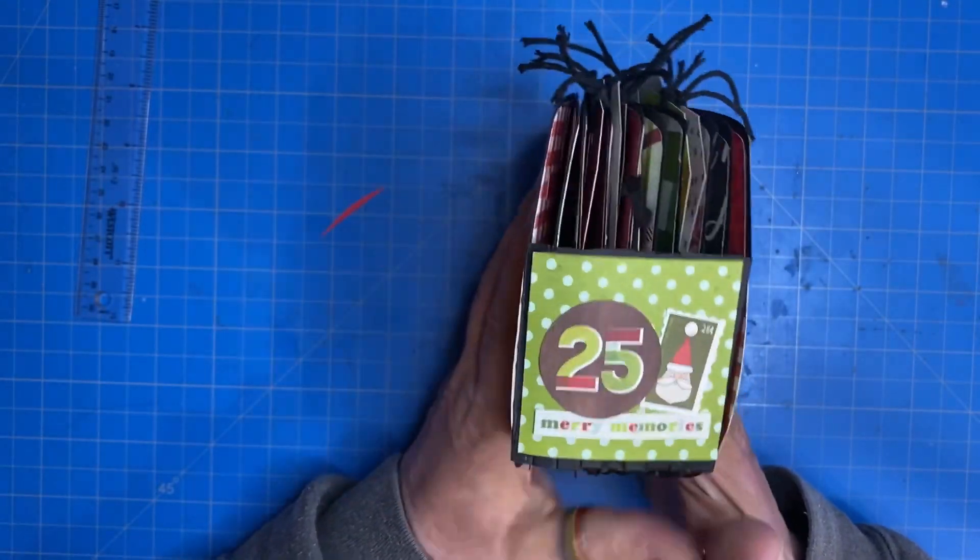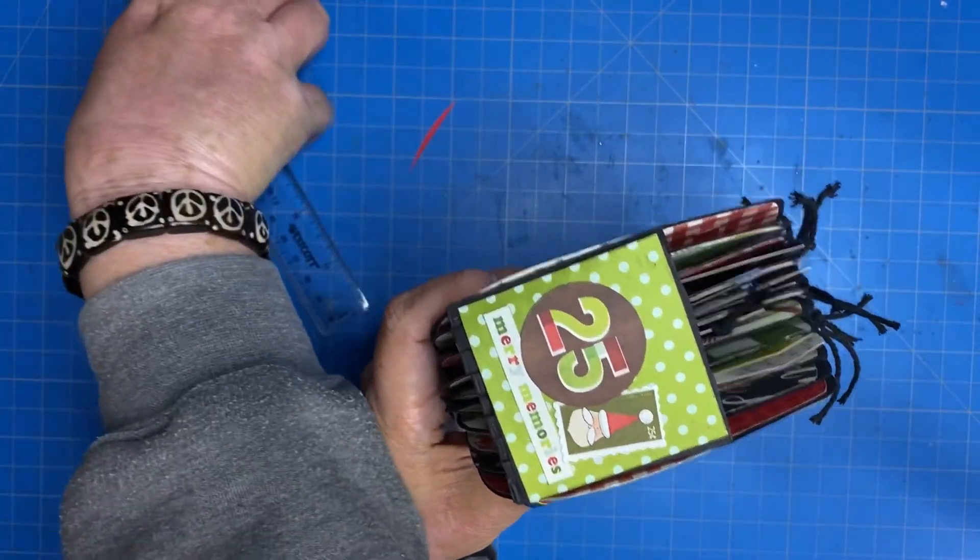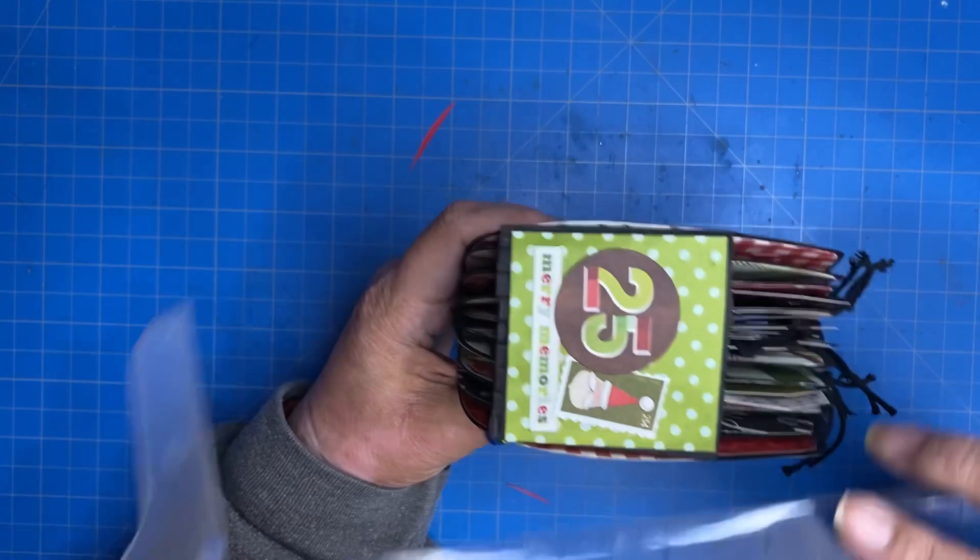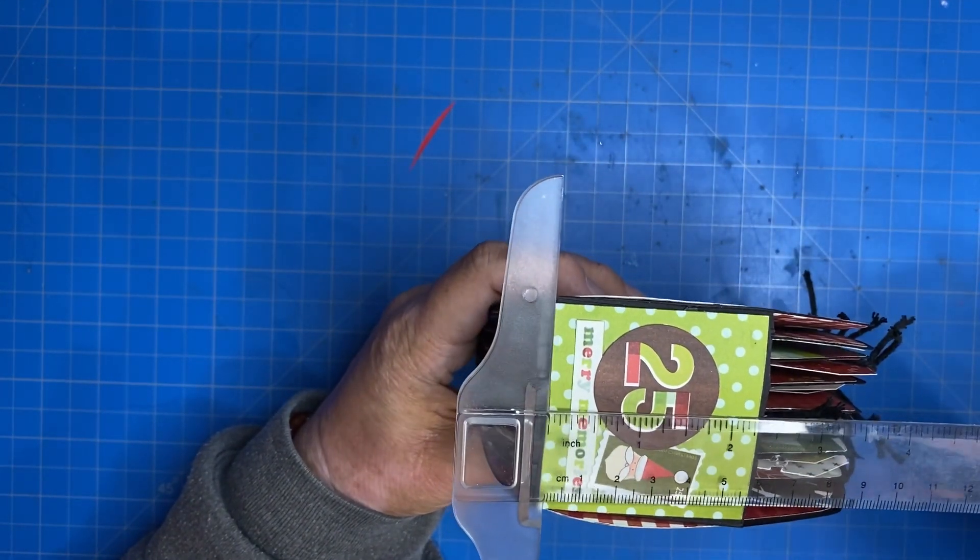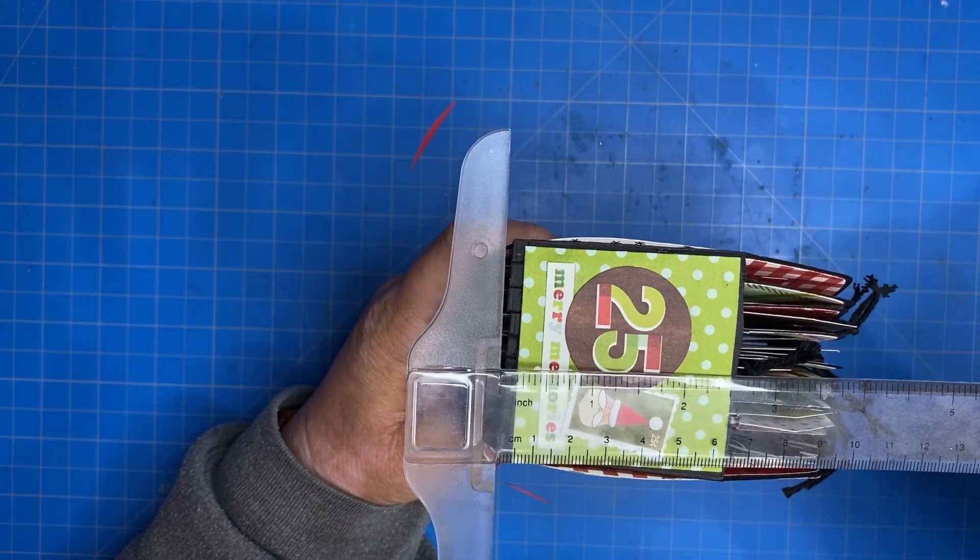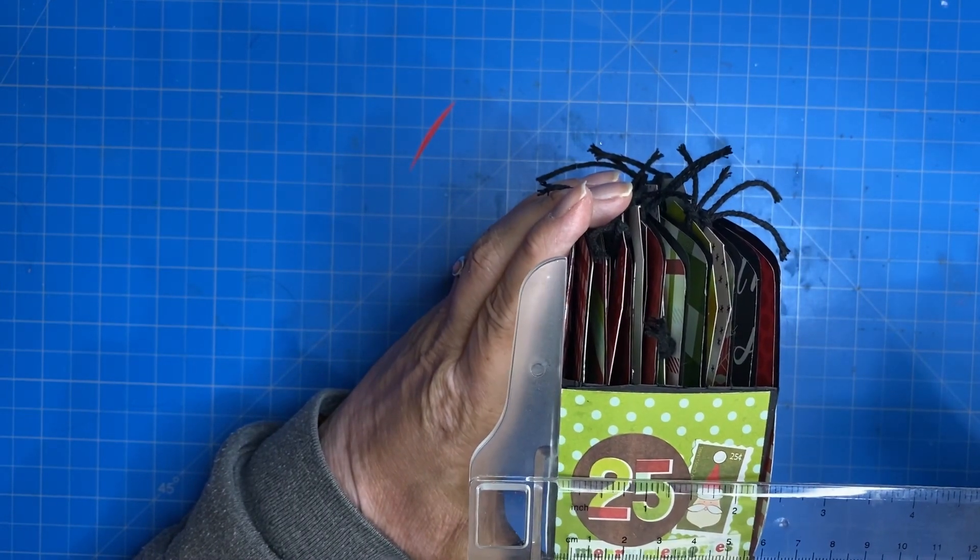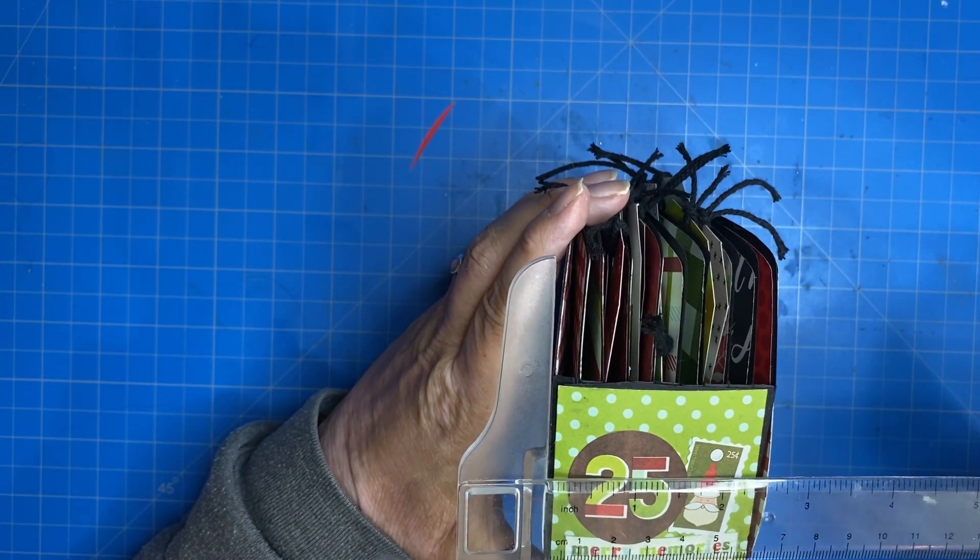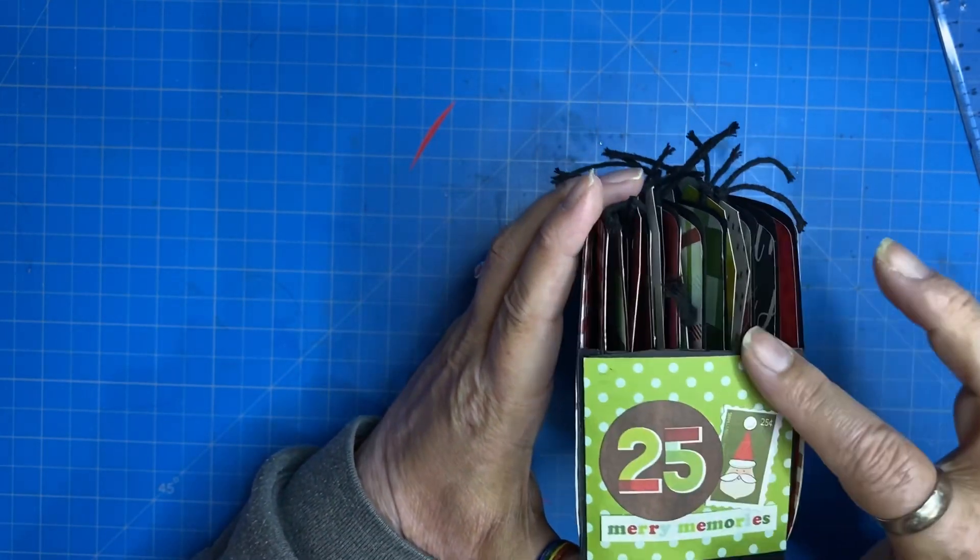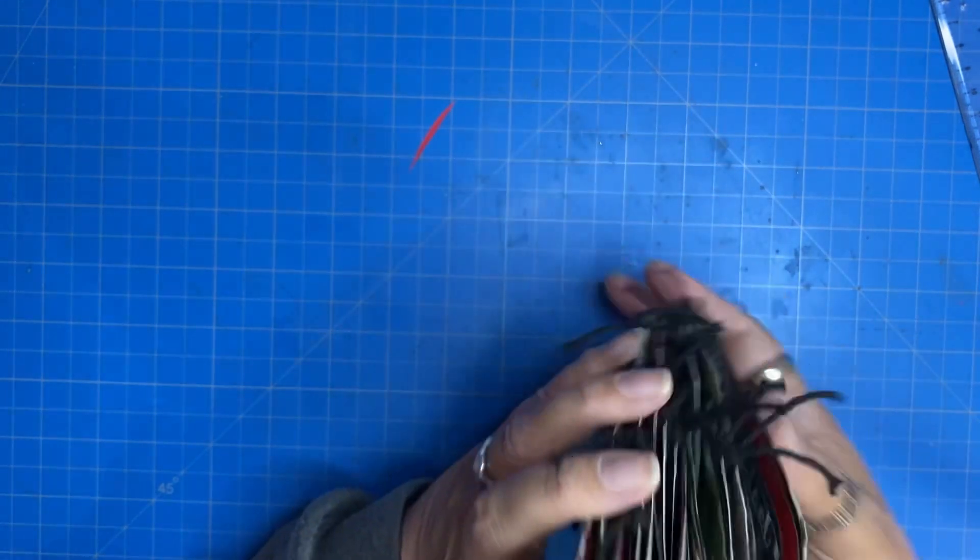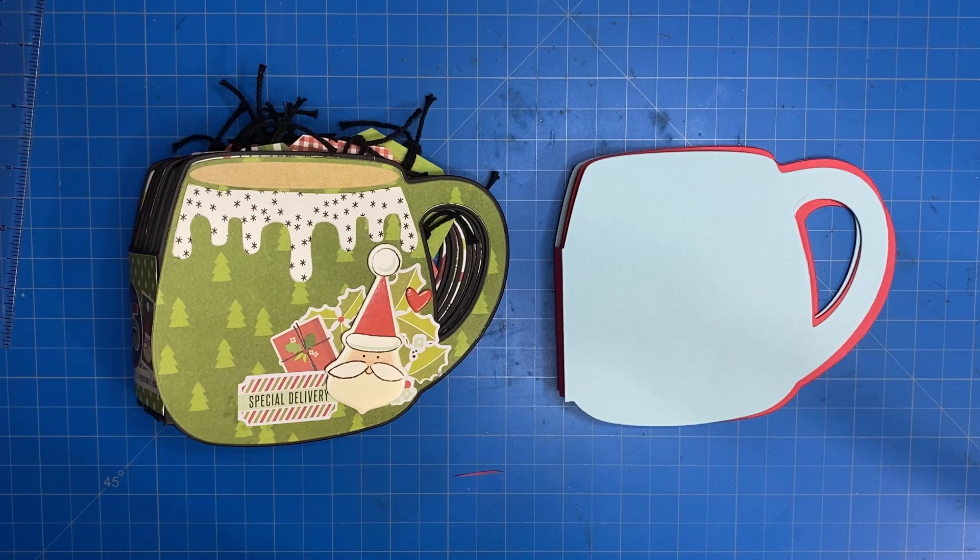Once you have your book completed, you want to just take a look at your gusset and figure out... So this one is two and a half inches by two and a half inches. So I went ahead and found the paper from the designer series that I wanted and cut a little square and just glued it right across. So that's it.